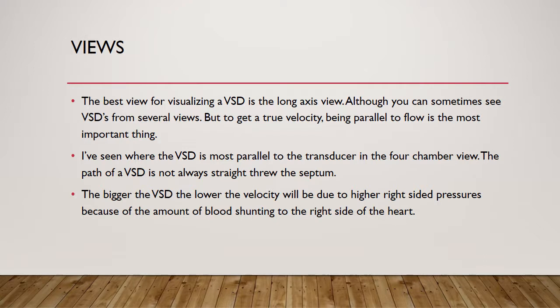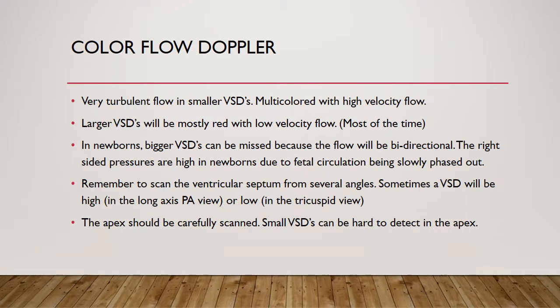The bigger the VSD, the lower the velocity will be, due to higher right-sided pressures from the amount of blood shunting to the right side of the heart. If the child has pulmonary hypertension, you're going to see a right-to-left shunt. Hopefully you won't see many of those patients because they usually don't do so well.